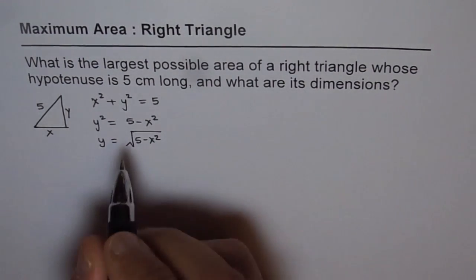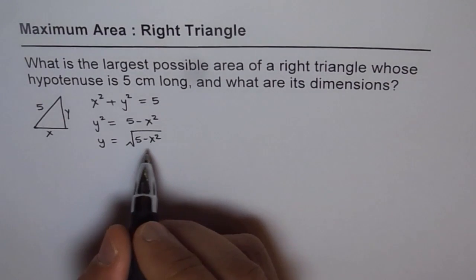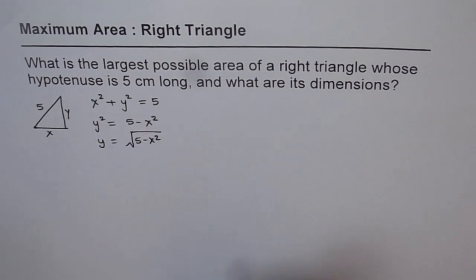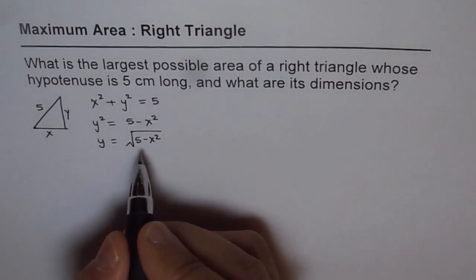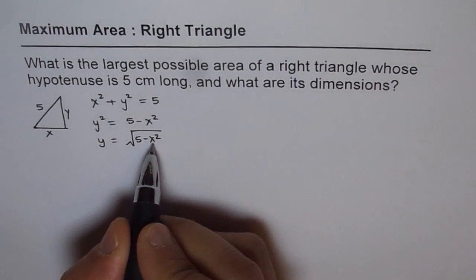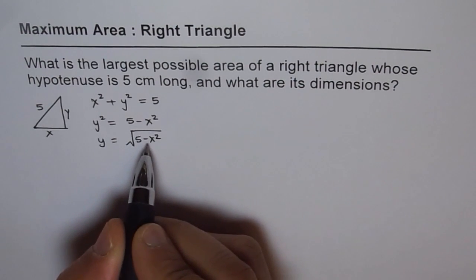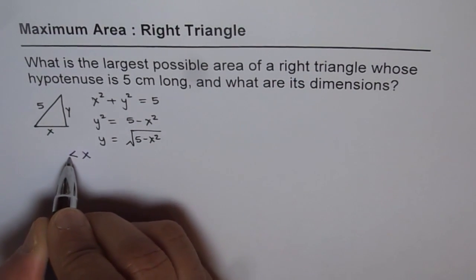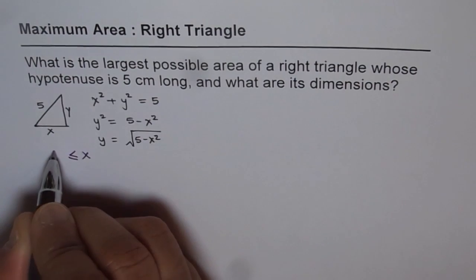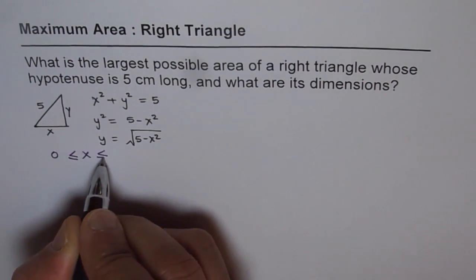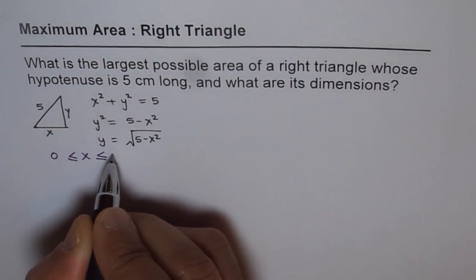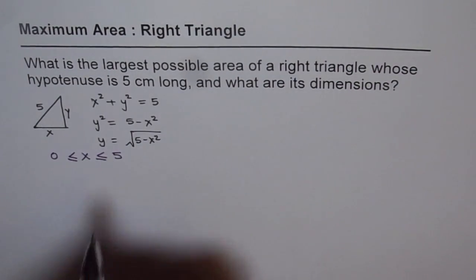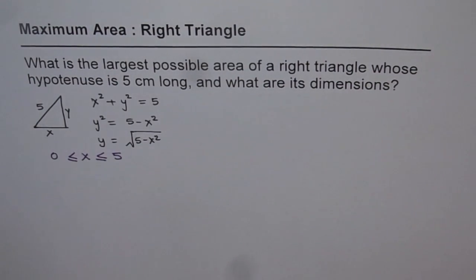From this equation we also get restrictions. If x is greater than 5, we get something negative within the square root. So the restrictions are that x has to be greater than or equal to 0 and less than or equal to 5. Those become our boundary conditions to check.